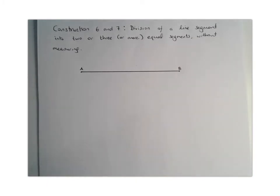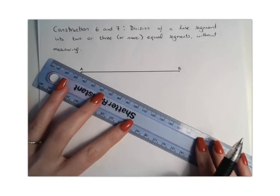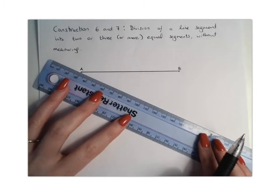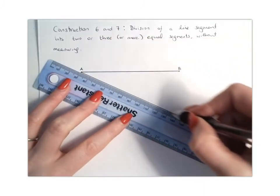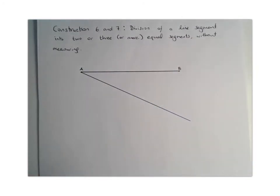So what we want to do is we start off by placing our ruler down at point A and we're going to draw a ray with an acute angle. So basically you want to make the angle less than 90 degrees. You're going to start at point A and you're going to draw a ray going out this way. It doesn't have to be any particular length. So that's our first step.